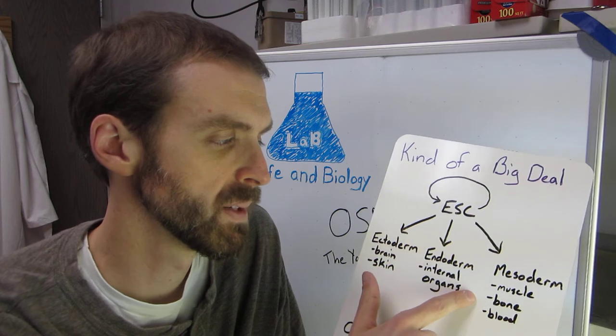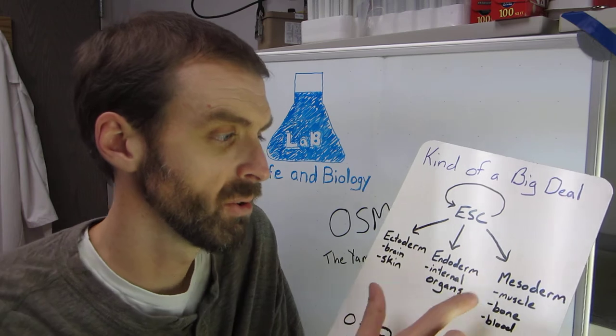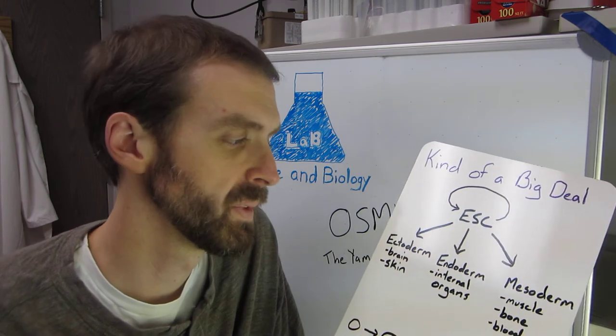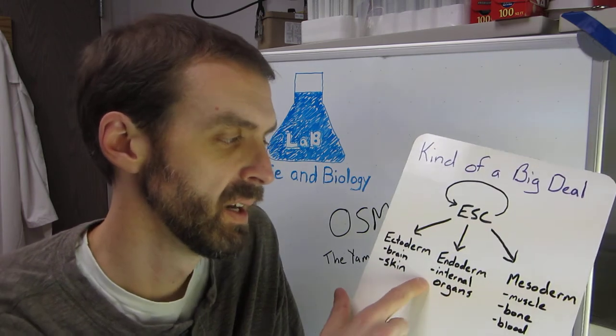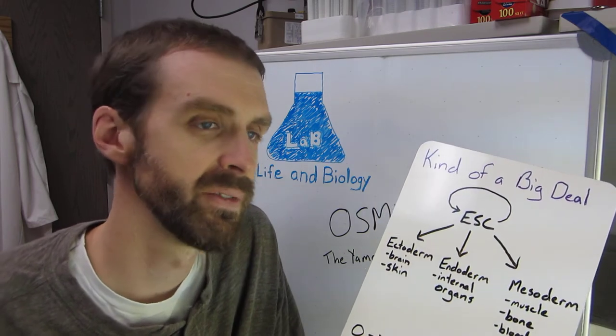Mesoderm: muscle, bone, and blood. So you can see skin and brain are kind of on the very outer edge of you, muscle, bone, and blood take a step inside, and then endoderm goes to your internal organs. So it's kind of three layers of you.